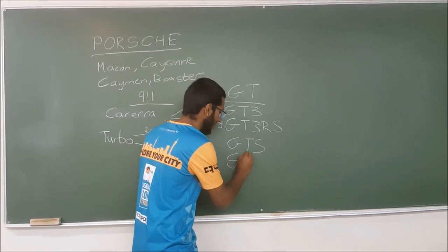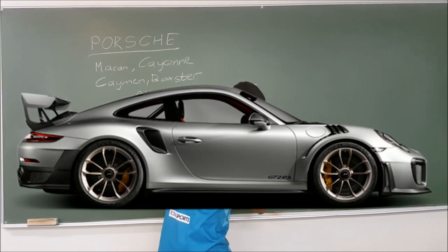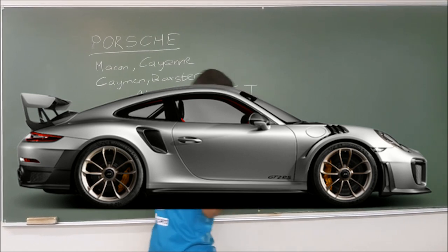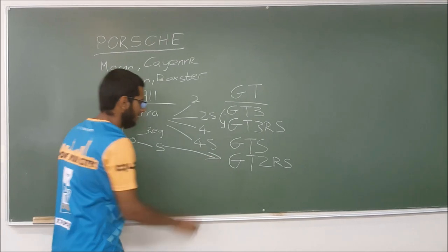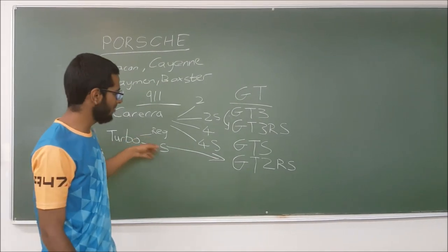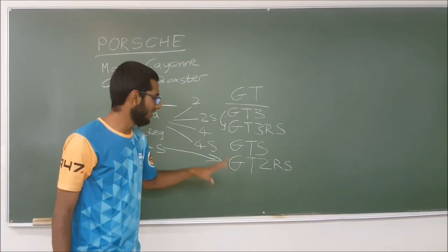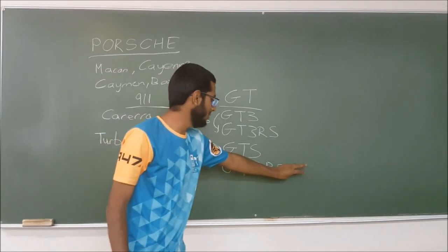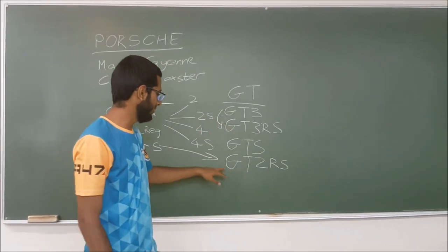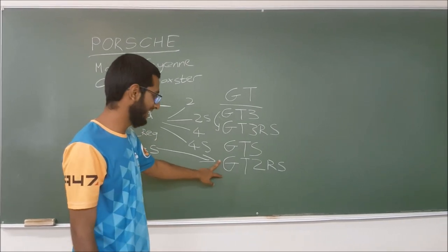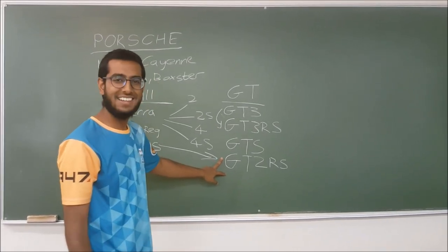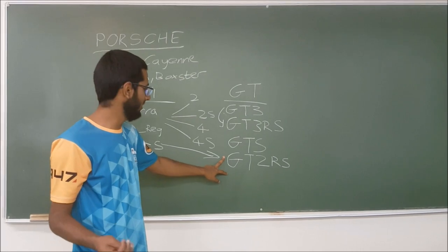Then you got the GT2 RS which is currently Porsche's fastest car. It takes the same base engine from the turbo but does revised turbo work on this, like variable geometry turbos. Makes around, I think, I'm not sure, 700 horsepower. It's like 500 something kilowatts.